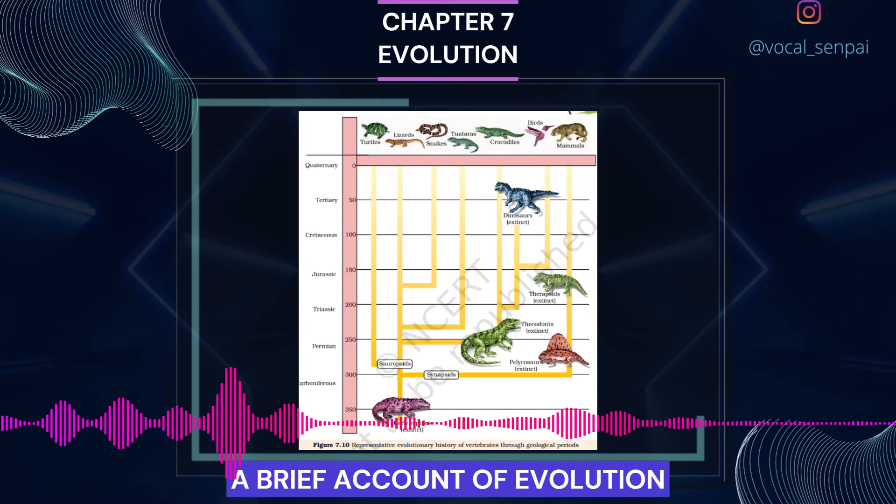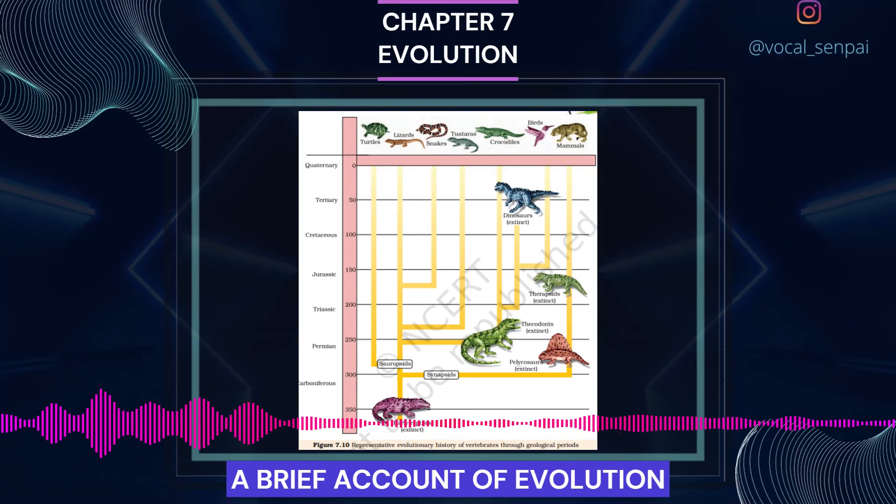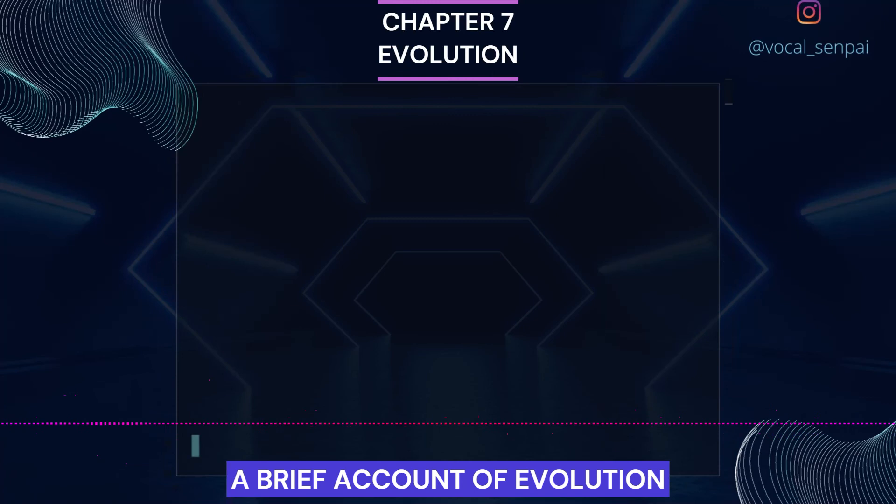The most successful story is the evolution of man with language skills and self-consciousness. A rough sketch of the evolution of life forms and their times on a geological scale are indicated in the figures.